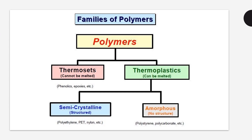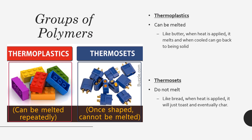Now let's look at the two main groups of polymers: thermosets and thermoplastics. Thermoplastics are polymers that can be melted. Think of them like butter — if you apply heat it will melt, and when you cool it back down it returns to being a solid. These are the recyclable polymers — for example, plastic bottles, water bottles, and milk cartons.